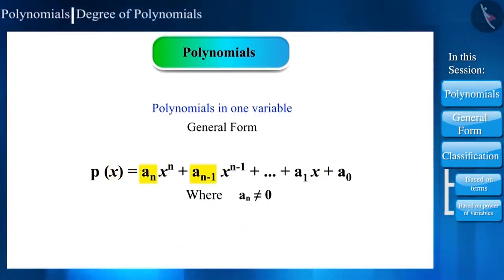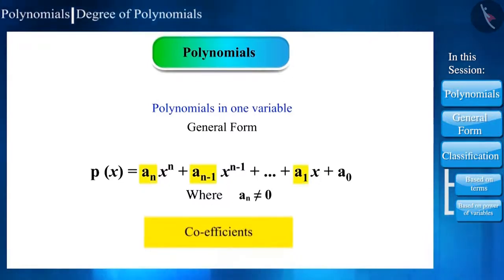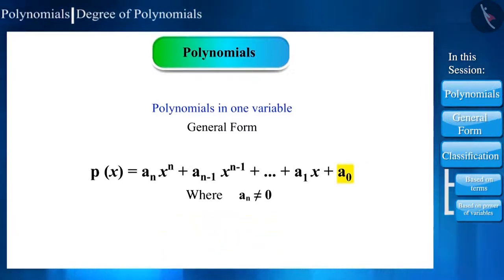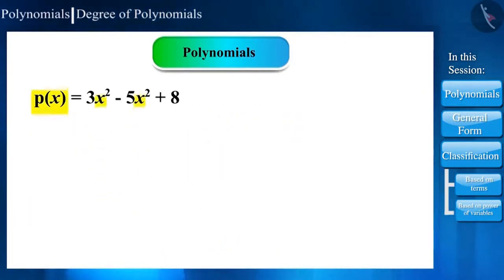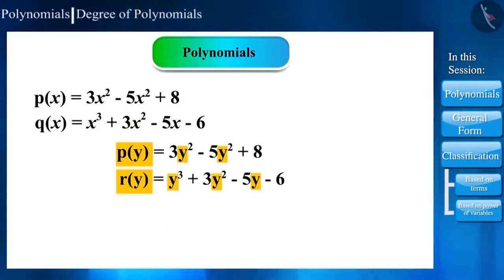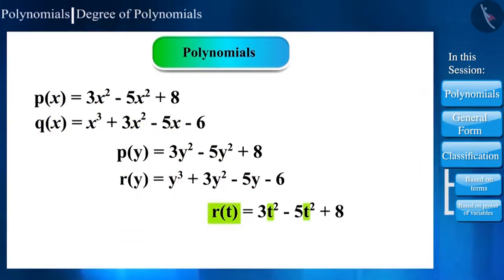The general form of a polynomial is expressed as aₙxⁿ + aₙ₋₁xⁿ⁻¹ + ... + a₁x + a₀, where X is the variable, aₙ, aₙ₋₁, ..., a₁ are coefficients, and a₀ is a constant. Polynomials are expressed as P(x), Q(x), or according to the variables, P(y), R(y), R(t), or Q(t).